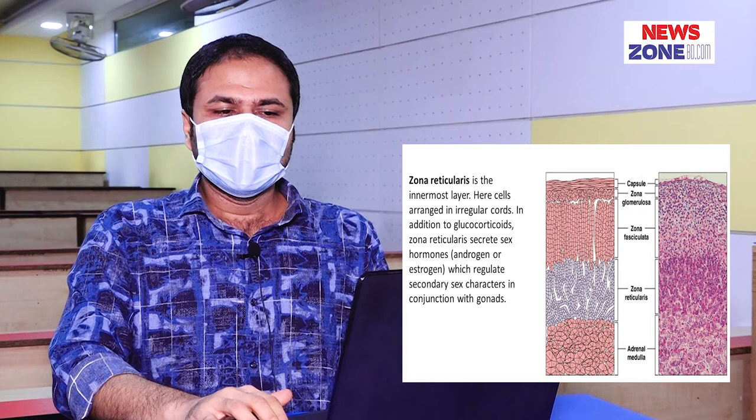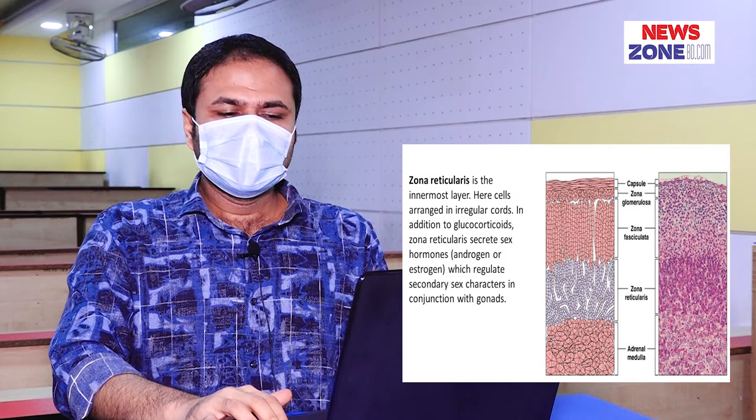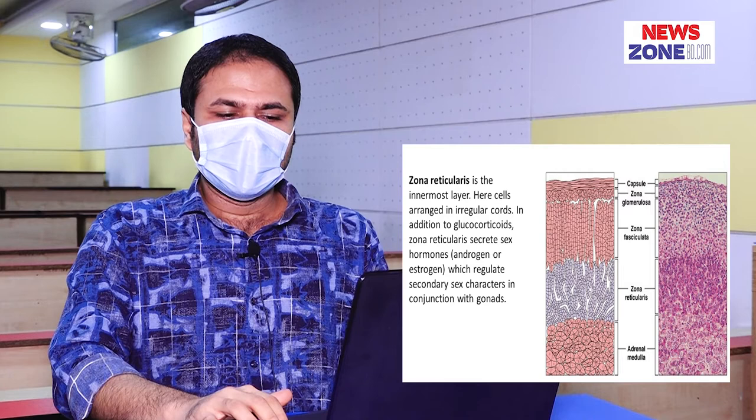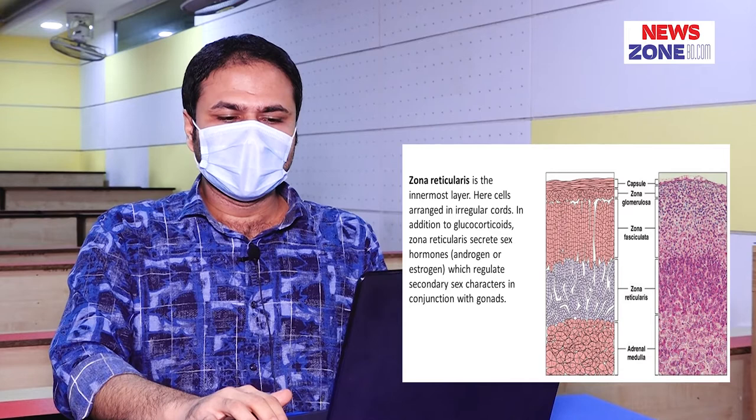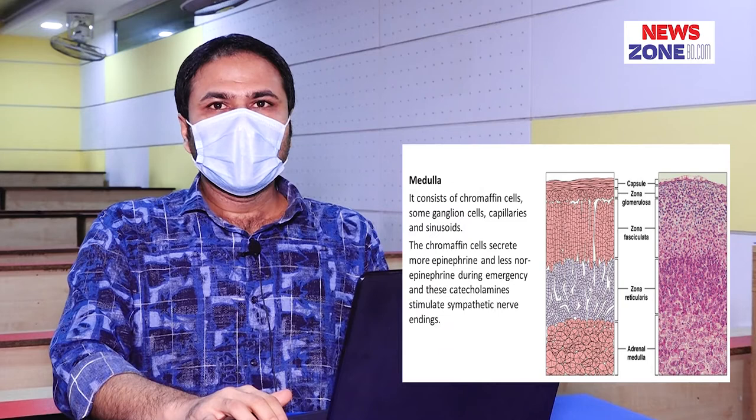Zona reticularis. It is the innermost layer. The cells are arranged in irregular cords. This zone secretes glucocorticoids and sex hormones, like androgen or estrogen. These sex hormones regulate secondary sex characters in conjunction with the gonads.